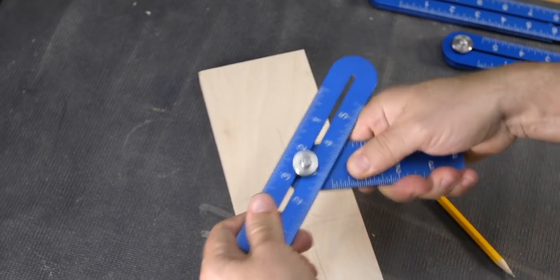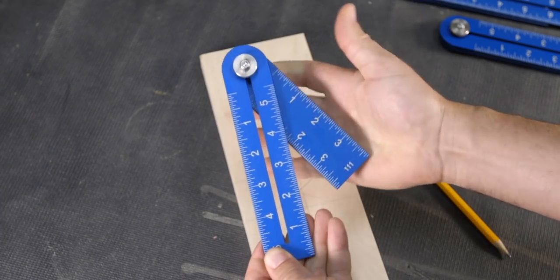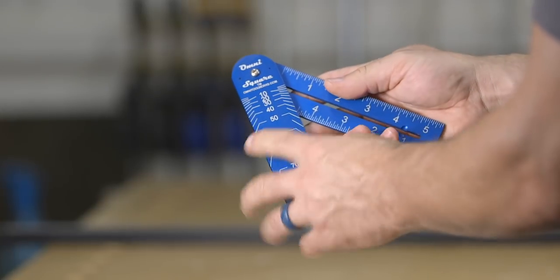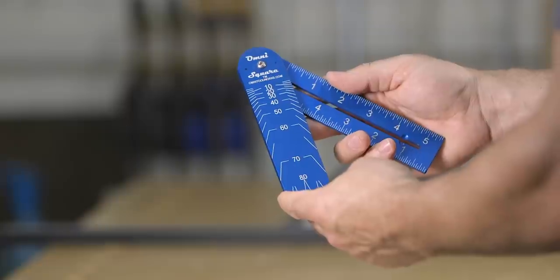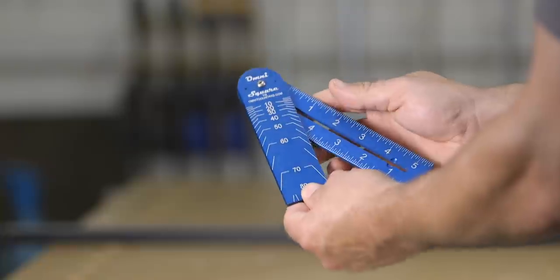It's also a beveled square, so if you need to find or copy angles, you can do that too. If you flip yours over, you can see all the angle readouts on the back. For example, here's a 65, a 60, and a 55 degree angle.